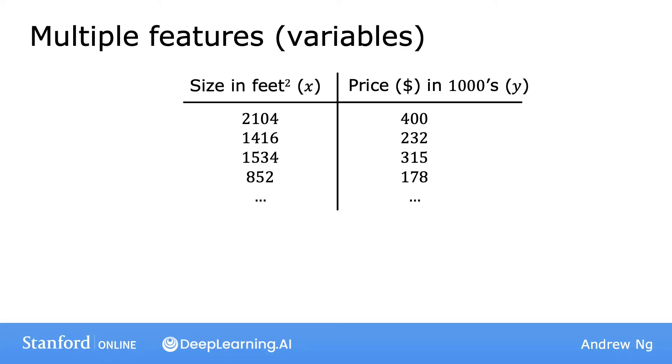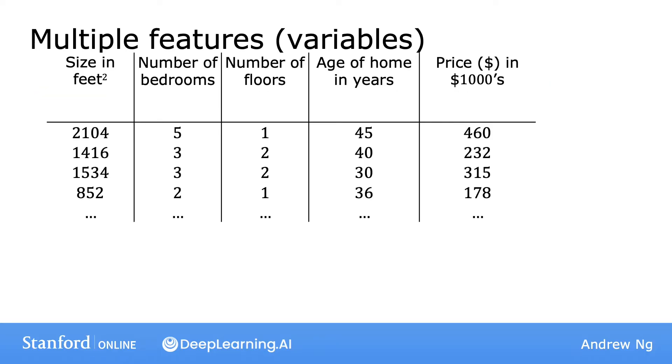In the original version of linear regression, you had a single feature x, the size of the house, and you're able to predict y, the price of the house. So the model was f_w,b of x equals wx plus b. But now, what if you did not only have the size of the house as a feature with which to try to predict the price, but if you also knew the number of bedrooms, the number of floors, and the age of the home in years? It seems like this would give you a lot more information with which to predict the price.